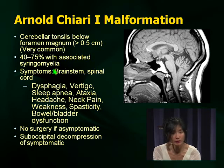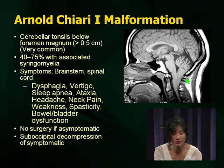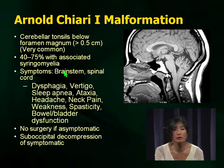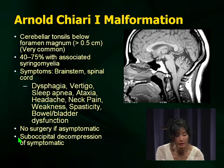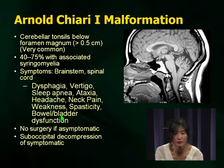An important associated finding is syrinx, which is extremely common in Chiari malformations. When you have a child with a Chiari malformation, don't just admire it — think about associated findings that might lead to intervention, and get a cord image. Remember, Chiari malformations are extremely common, but the majority need no intervention if there are no symptoms. However, because the brainstem is being compressed, there can be brainstem signs: dysphagia, vertigo, ataxia, headache, and neck pain.